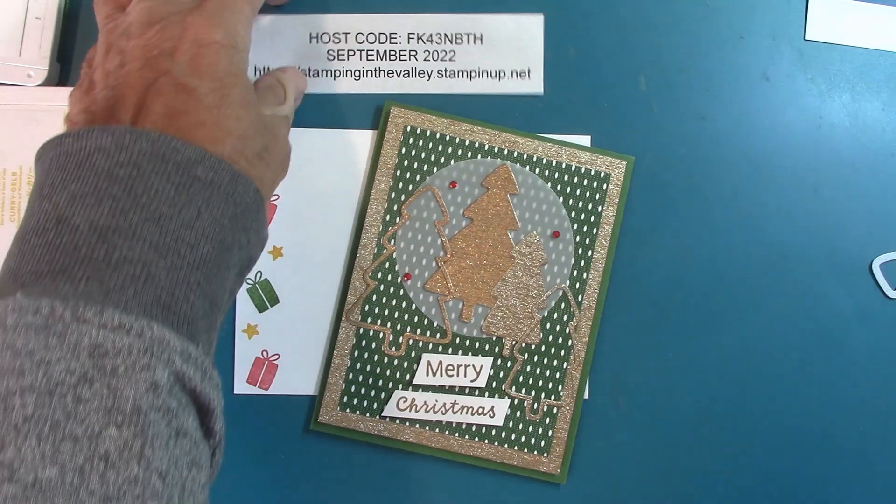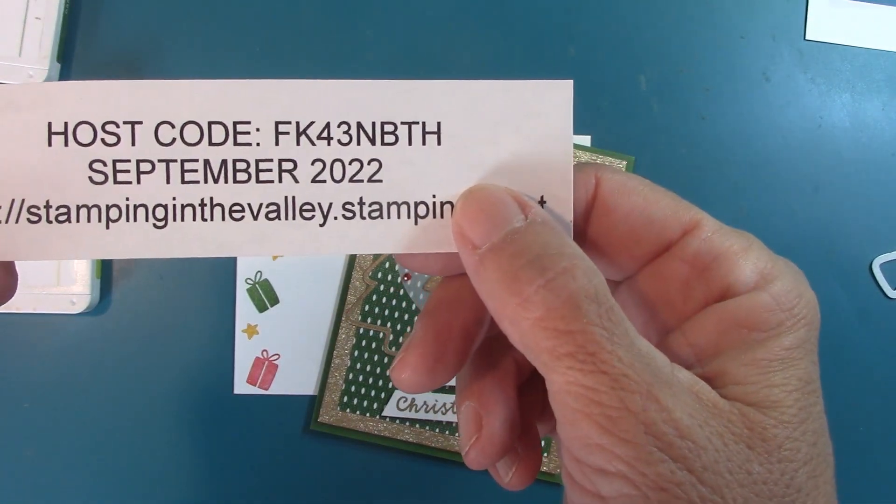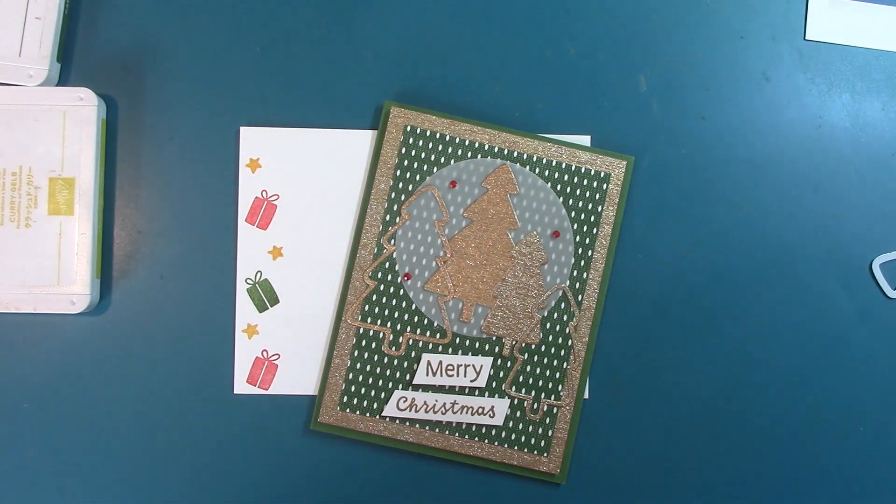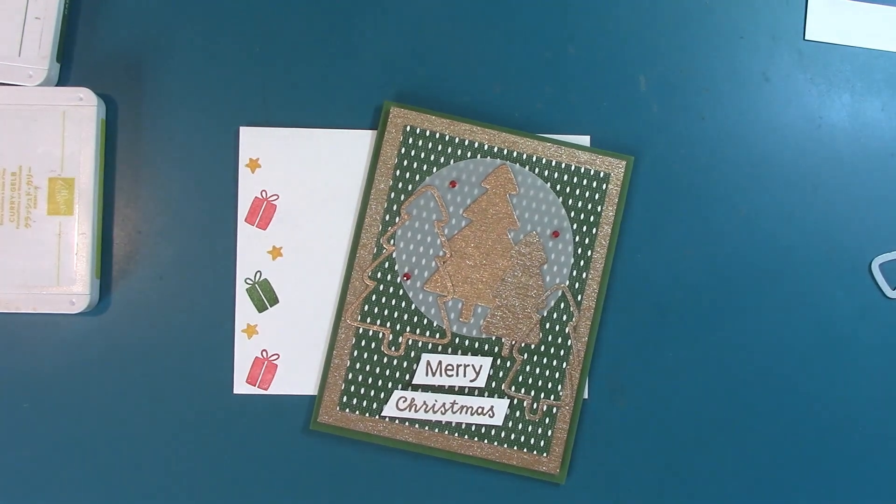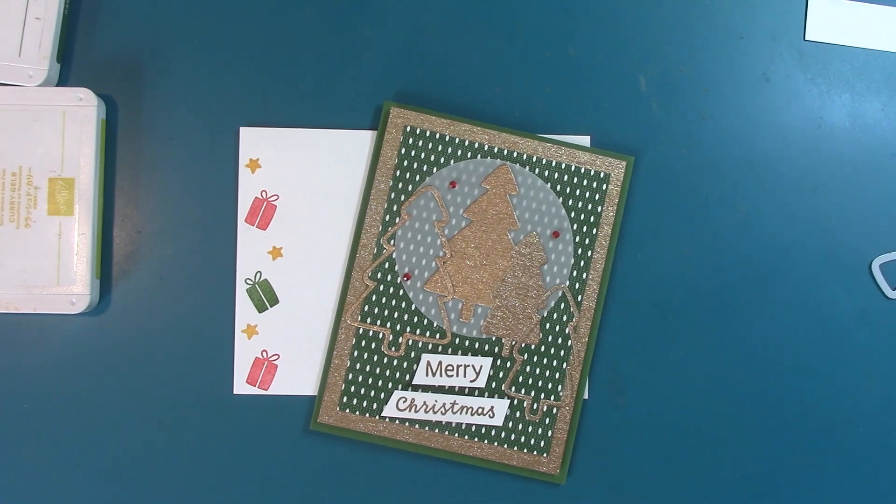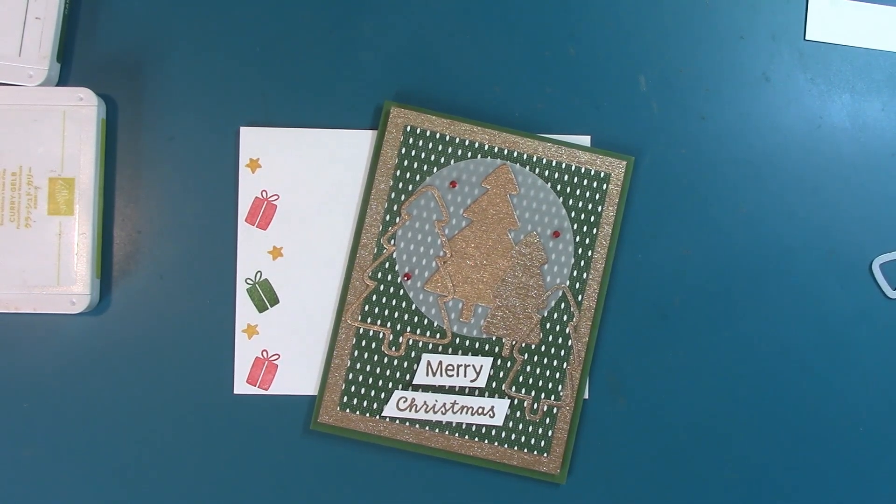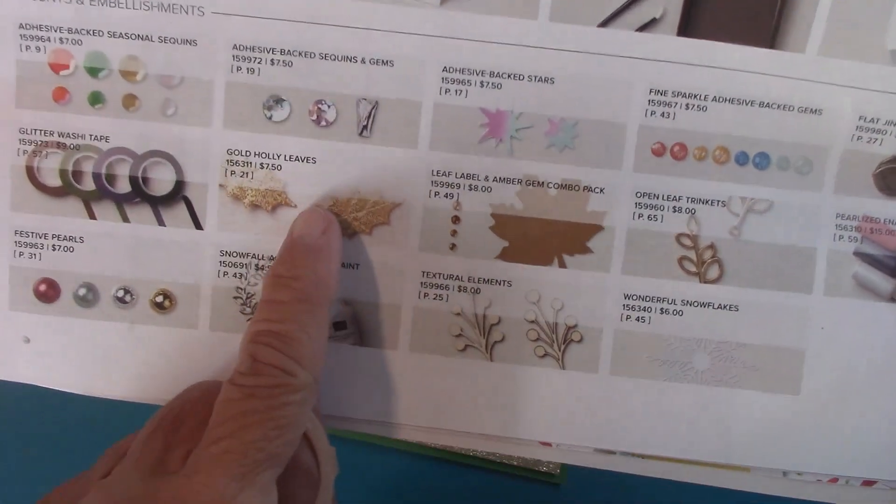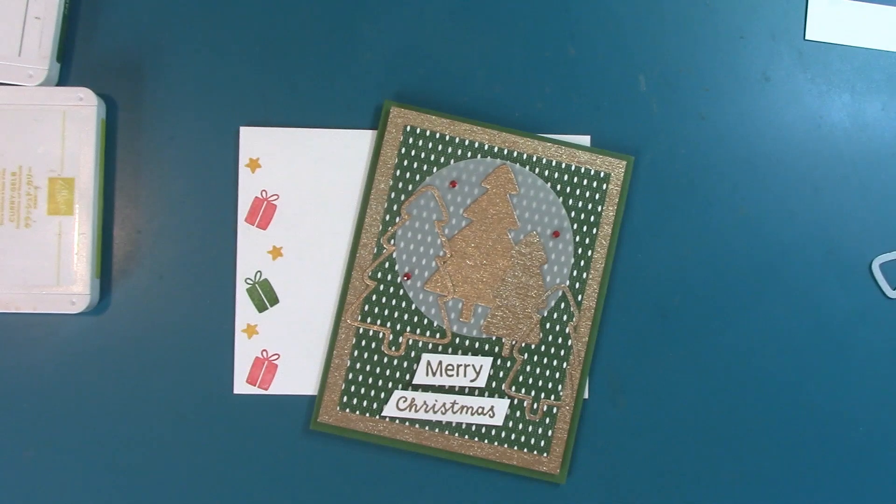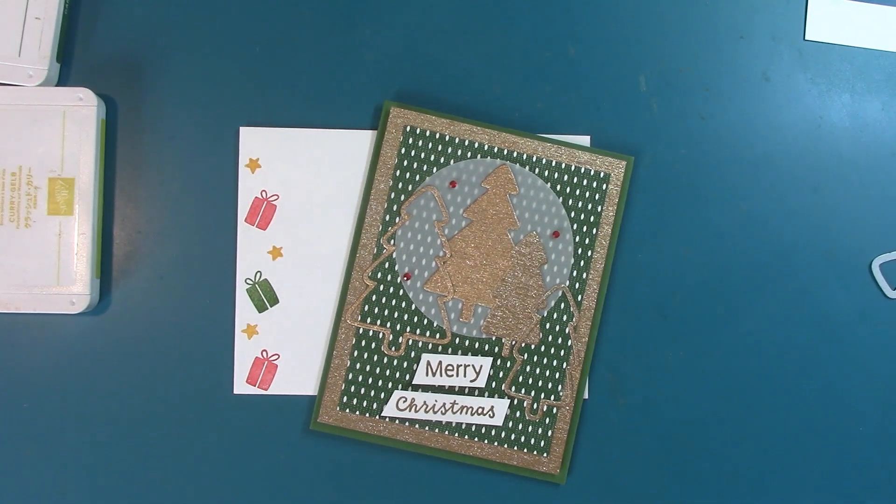Now, until the end of September, here is my host code. With a $50 order, I will send you a package of the gold holly leaves - the gold holly leaves in the mini catalog. Let me show you that real quick here. I've been working on my next card class. You're going to love it. Right here, these gold holly leaves. I had so much fun with these last year, and I'm actually out of them. I've used every single one.